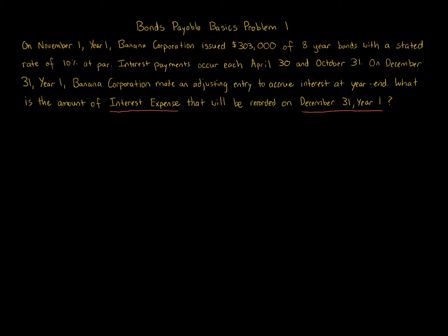Banana Corporation issued $303,000 of 8-year bonds with a stated rate of 10% at par. Interest payments occur April 30th and October 31st, so it's semi-annual. On December 31st, Year 1, they made an adjusting entry to record the accrued interest.